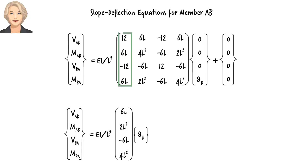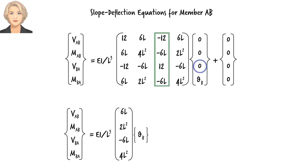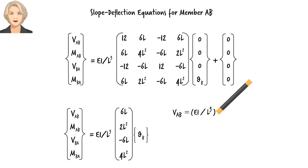Since the first column of the stiffness matrix represents the coefficients of delta_A, the second column represents the coefficients of theta_A, and the third column represents those for delta_B, we can remove them from the matrix and rewrite the equations in compact form. And here are the exact same equations in algebraic form.